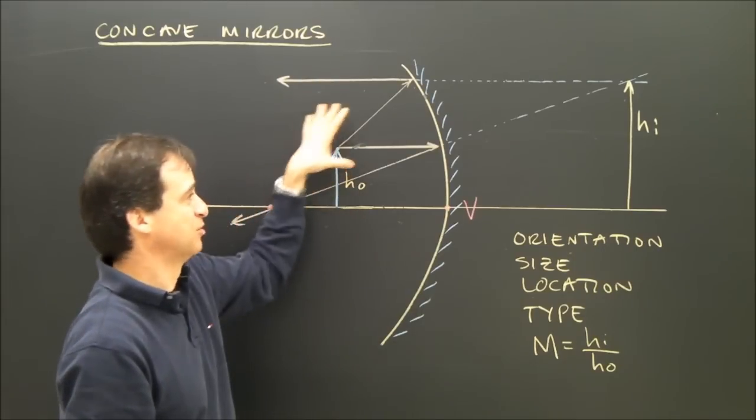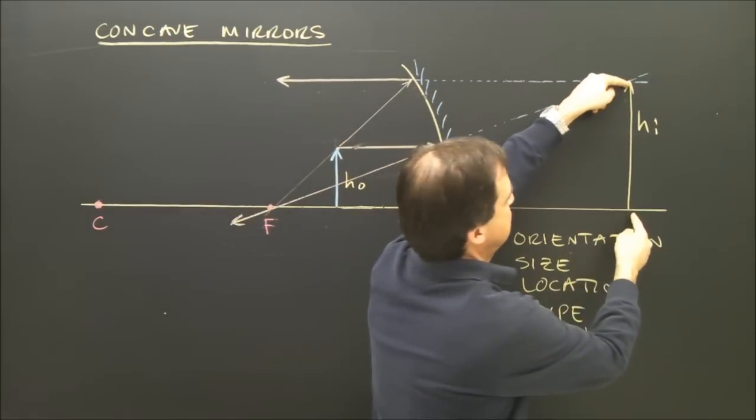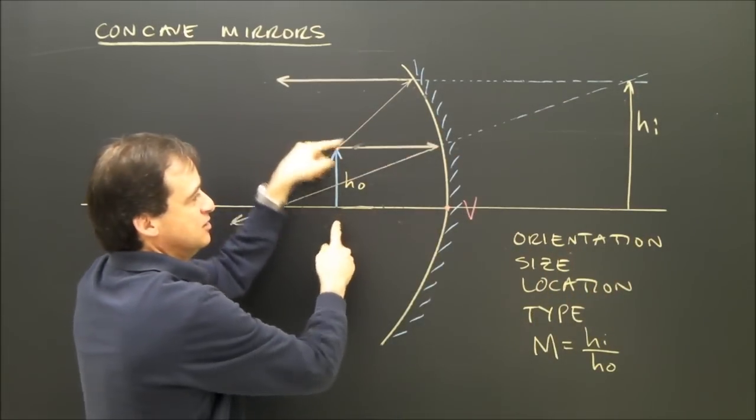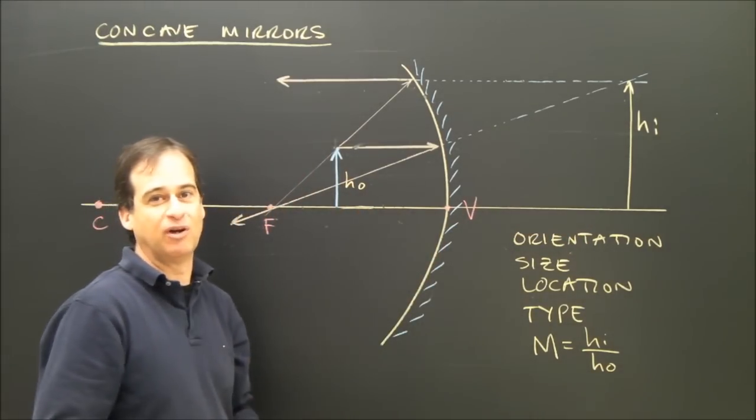Type, we said it was virtual because the rays didn't actually meet. And the magnification, I'd measure this. I'd measure this. Height of image over height of object. Calculate the magnification. It's going to be greater than one.